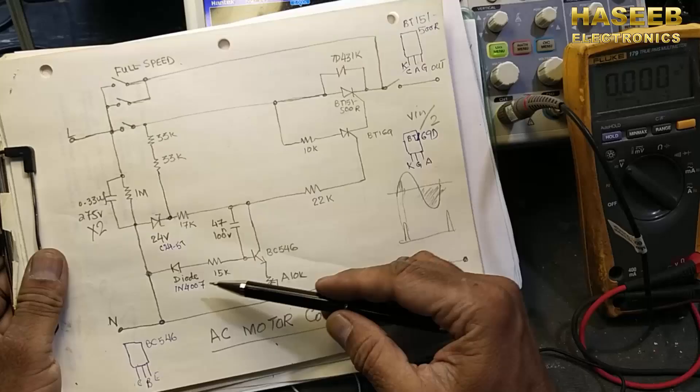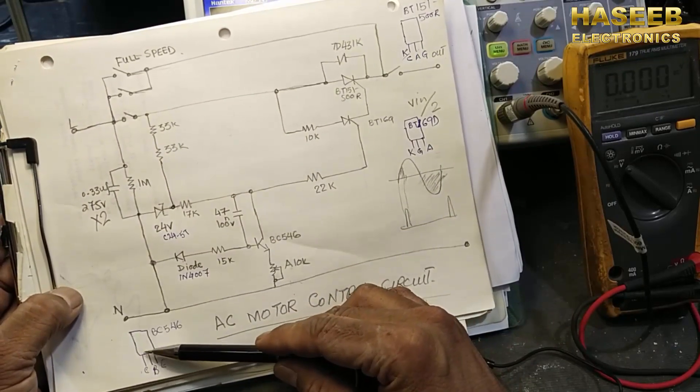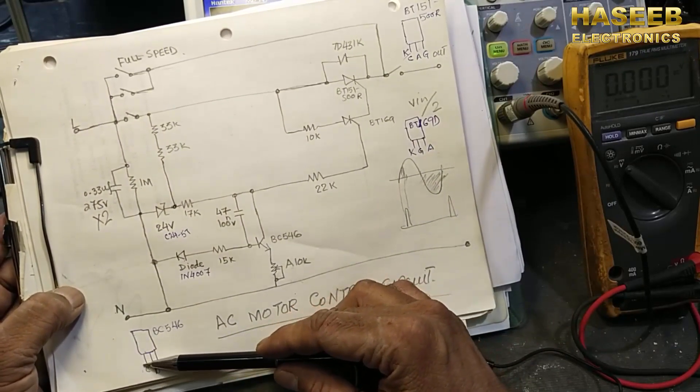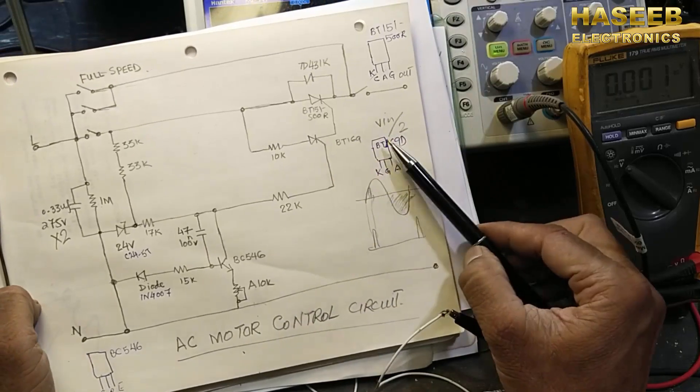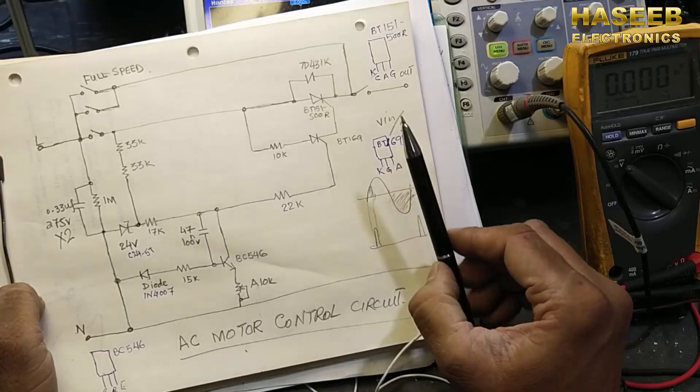So we have BC546: collector, base, emitter. If you put the number in front side, collector, base, emitter. And BT169D: cathode, gate, anode.